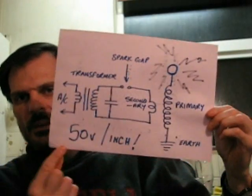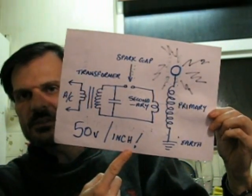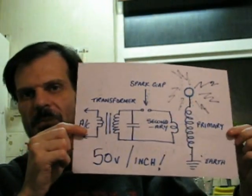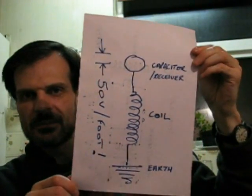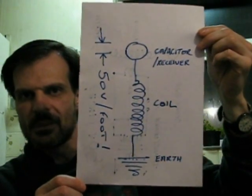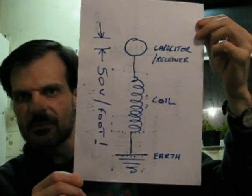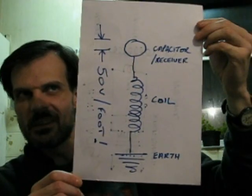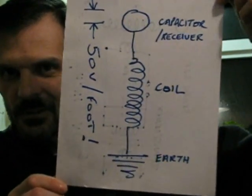I made a slight mistake with my circuit, by the way. I said it was 50 volts per inch and it's not 50 volts per inch, it's actually approximately 50 volts per foot. This is the old imperial measurement, approximately 3 feet to a meter, in case you didn't know.